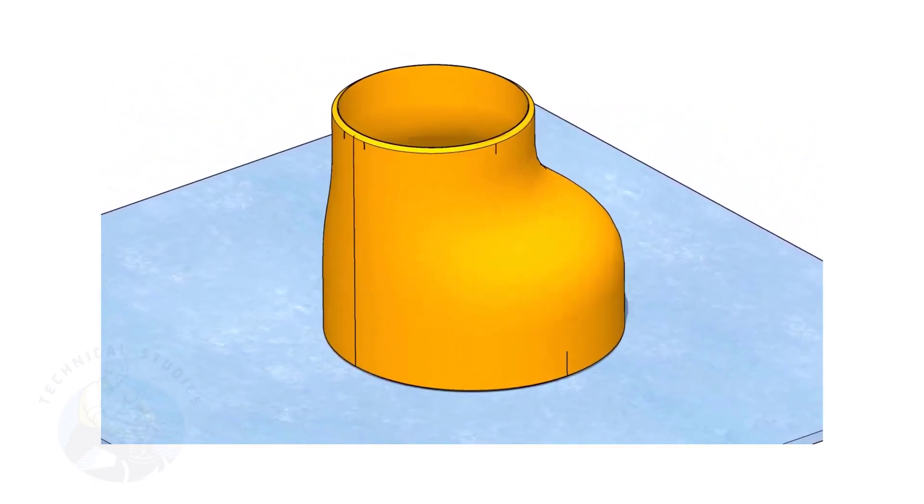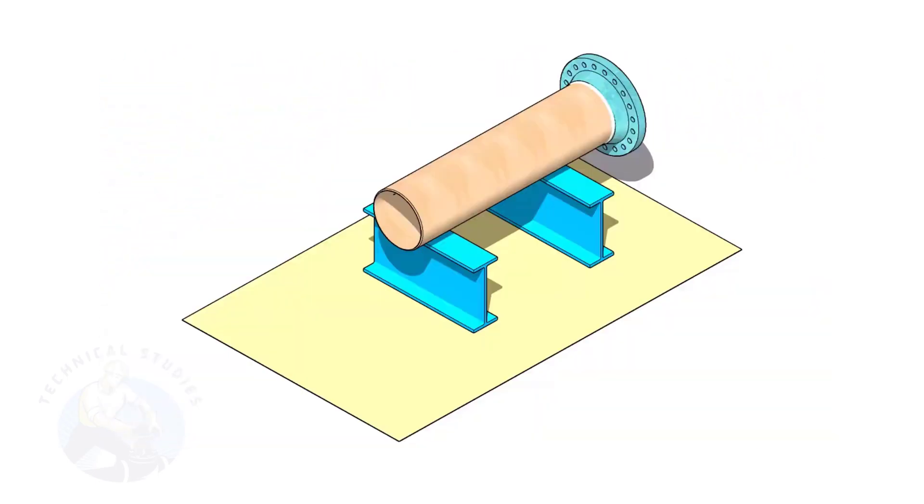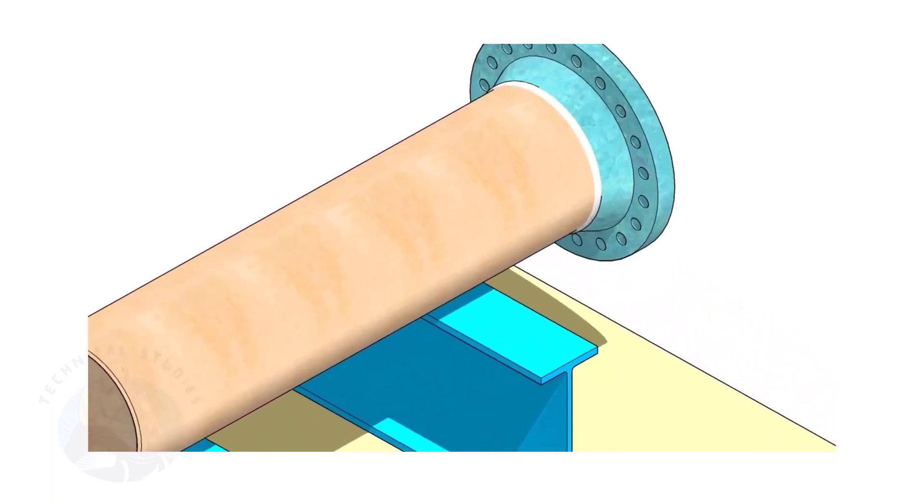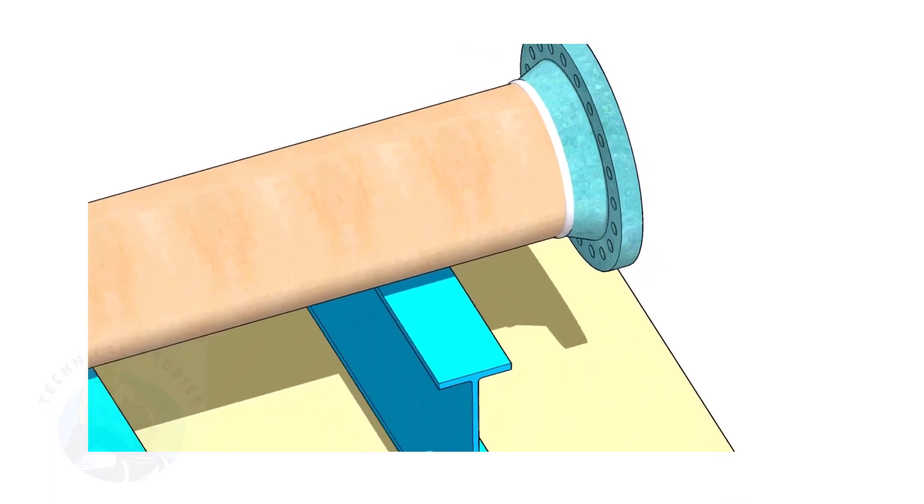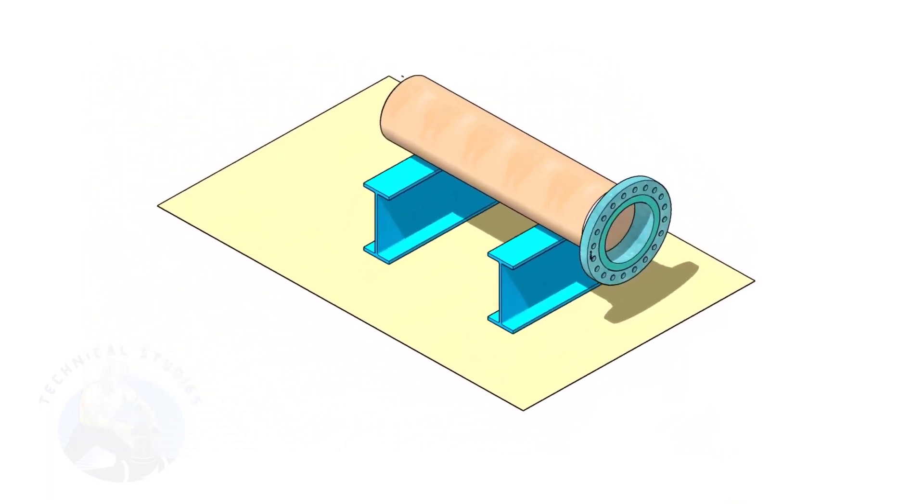Remember, the sequence of the fit up is more important. Assume that the flange is welded to the pipe. Put the spool on suitable supports. Correct the plumbness of the flange.